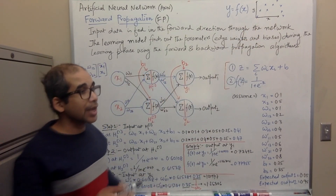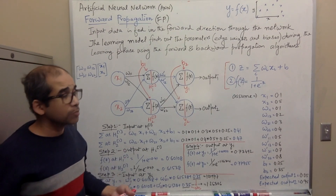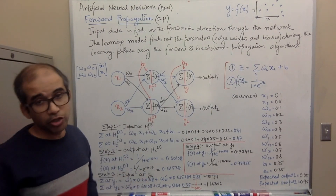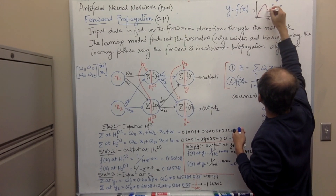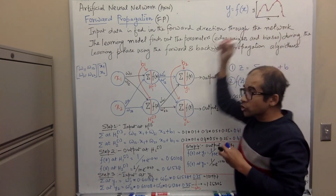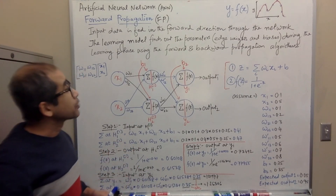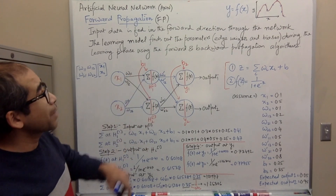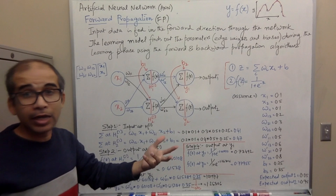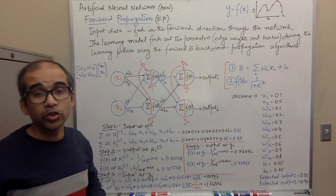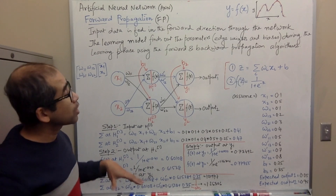According to the universal approximation theorem, which I have already discussed, a well-designed deep neural network can approximate any arbitrarily complex and continuous relationship among variables. If this is the graph, the neural network can track it and find a function that very closely follows the pattern of that mapping. So if a new data point comes, you can use that graph to predict the corresponding value of y based on the input value of x.